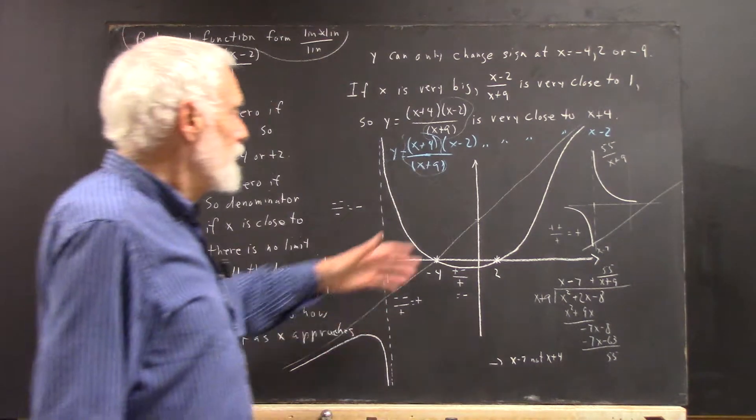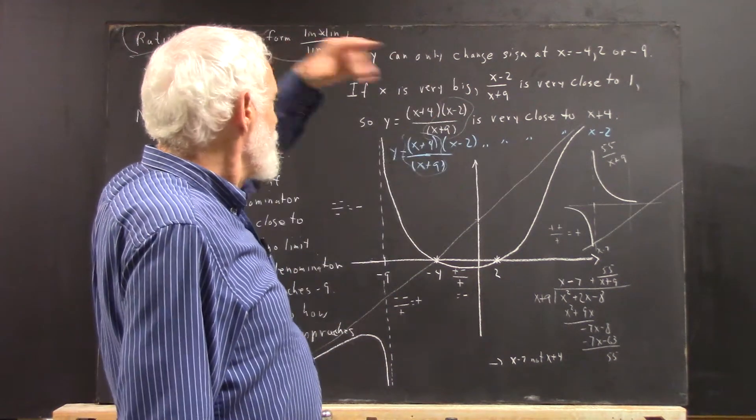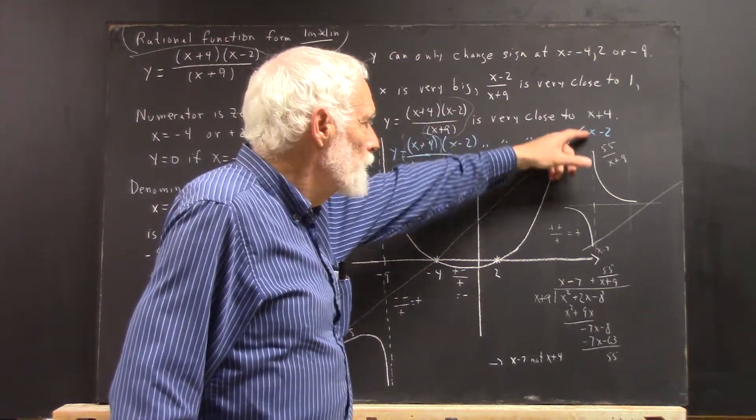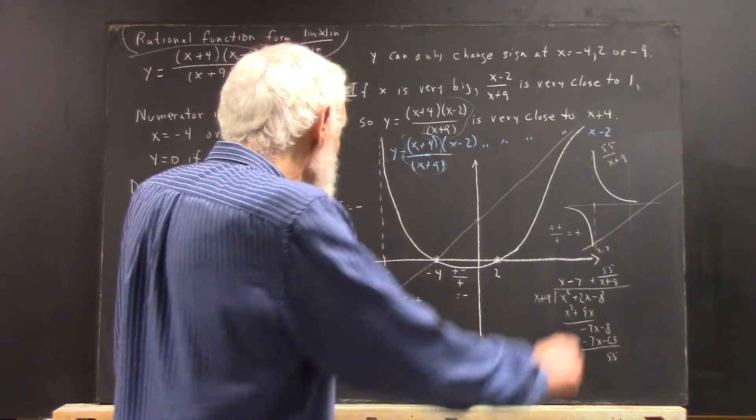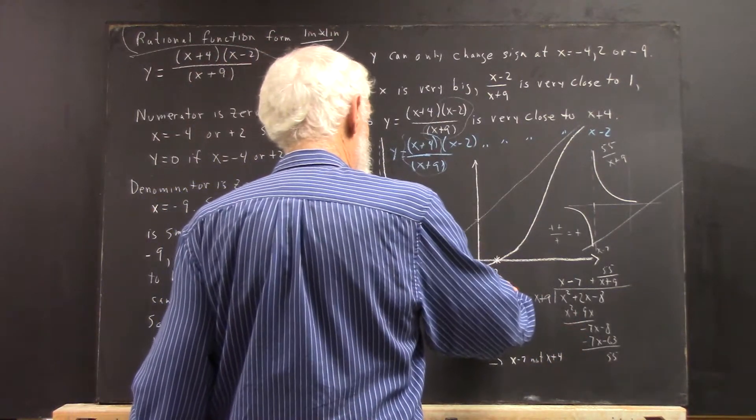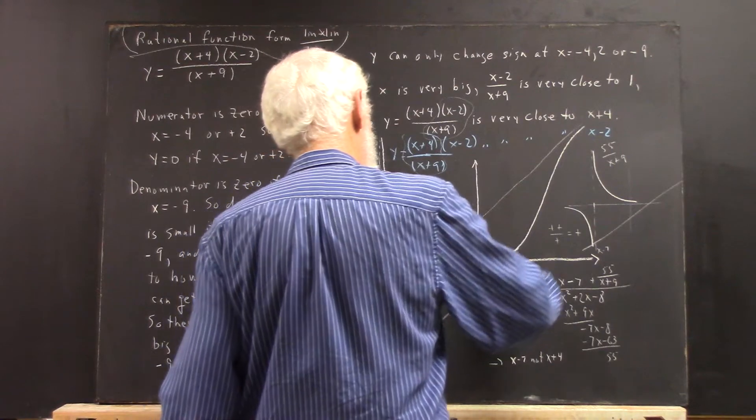So x+4 and x-2 have graphs that look a whole lot different. If this is x+4, then x-2 is going to be about here.